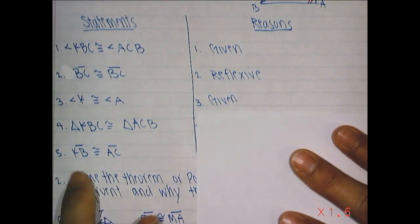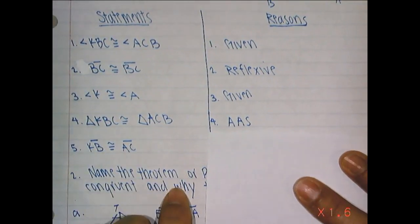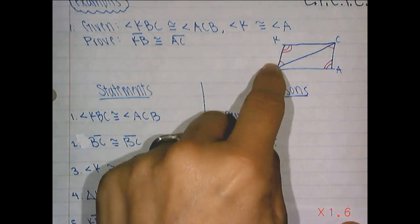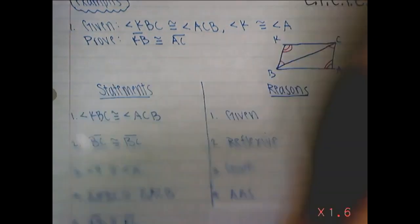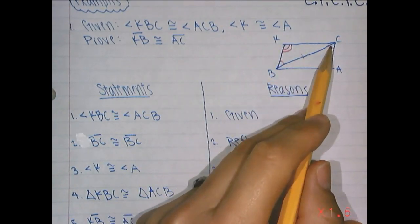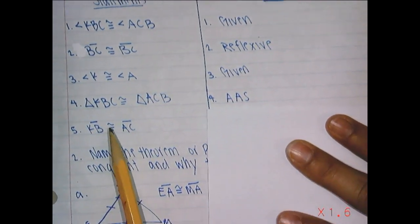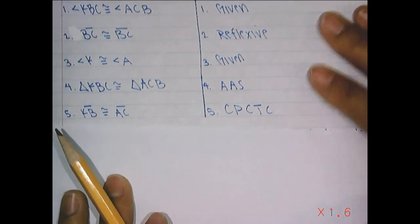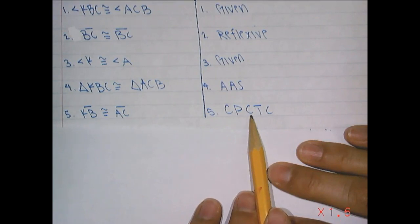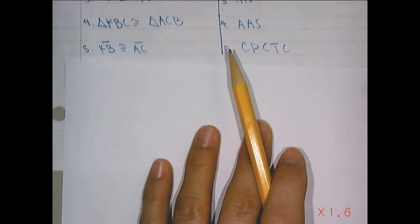Now I'm going to say triangle KBC is congruent to triangle ACB. I can say that they are congruent because of angle, angle, side. Here's an angle, another angle, and now we can mark their side as congruent as well — angle, angle, side. We've proved the triangles are congruent. Now I want to say that KB is congruent to AC. Because the triangles are congruent, you would say corresponding parts of congruent triangles are congruent — CPCTC.